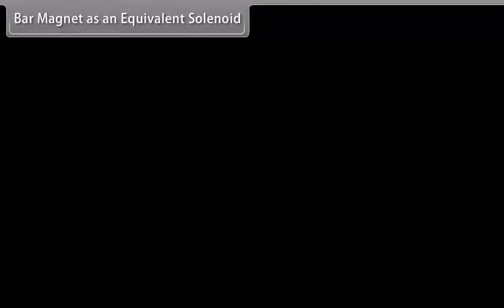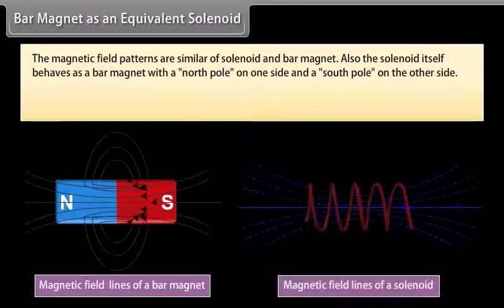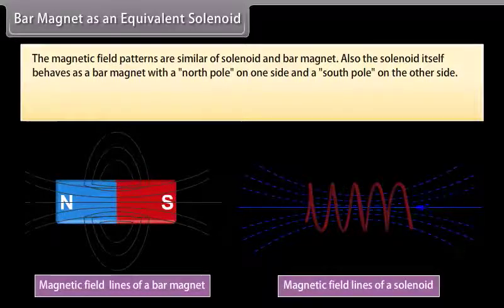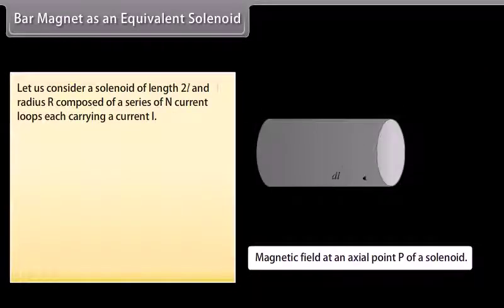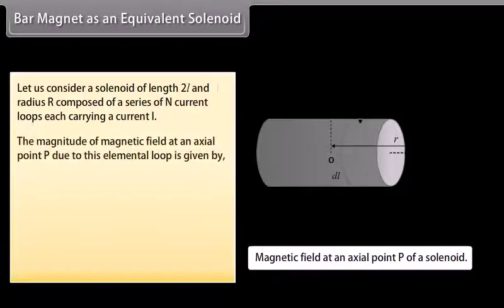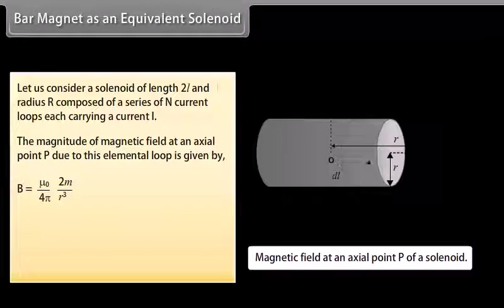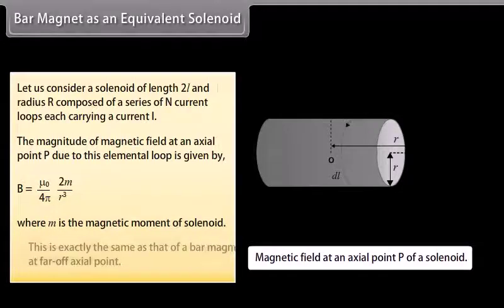Bar magnet as an equivalent solenoid: The magnetic field patterns of a solenoid and bar magnet are similar. The solenoid itself behaves as a bar magnet with a north pole on one side and a south pole on the other side. Two adjacent solenoids can either attract or repel each other depending on the relative directions of the currents. Consider a solenoid of length 2L and radius R composed of a series of N current loops each carrying a current I. The magnitude of magnetic field at an axial point P due to this elemental loop is given by mu0 over 4pi multiplied by 2m over R³, where m is the magnetic moment of the solenoid. This is exactly the same as that of a bar magnet at a far off axial point.